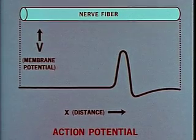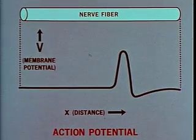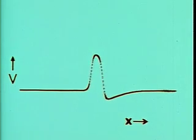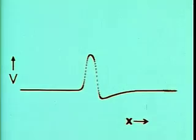To see changes in both time and distance, watch the curve. This is an action potential moving along a nerve fiber in slow motion.